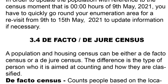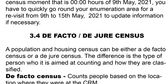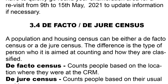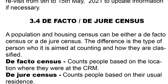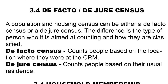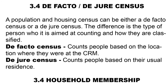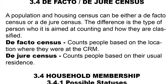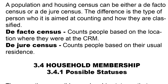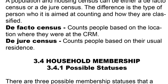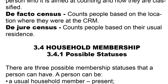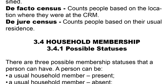A population and housing census can either be a de facto census or a de jure census. The difference is the type of person it aims at counting and how they are classified. A de facto census counts people based on the location where they were at the CRM, while a de jure census counts people based on their usual residence.